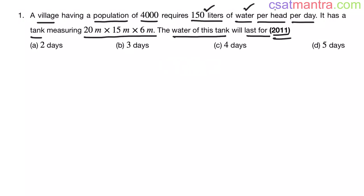150 liters of water per head per day. So one person uses 150 liters of water per day. We have 4000 people. They will use 4000 into 150 liters per day my friends.